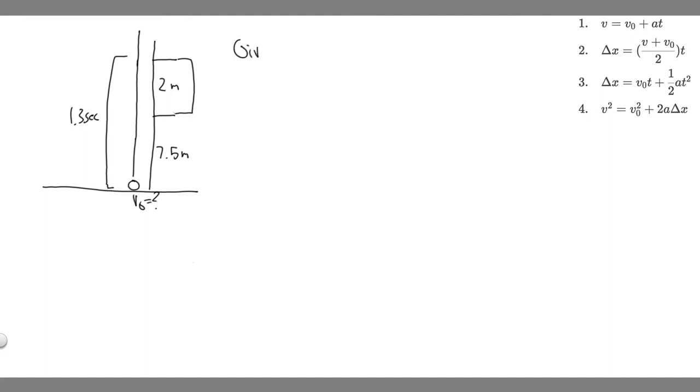So what information are we given in order to solve this problem? We're going to use kinematics. We want to pick an interval to which we know some information that we can solve for V sub 0. The interval we're going to choose is the time. They give us the time, 1.3 seconds. We know that the distance it travels in 1.3 seconds is 7.5 meters plus 2, so 9.5 meters. So the change in y in this interval is 9.5 meters.